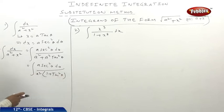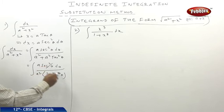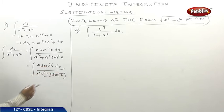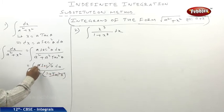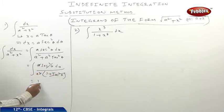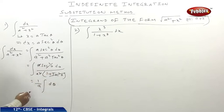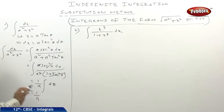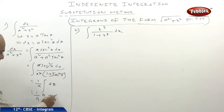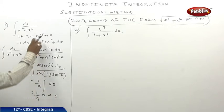We know that sec²θ minus tan²θ equals 1, so 1 plus tan²θ equals sec²θ. The sec²θ terms cancel, and the a's cancel, leaving (1/a) integral of dθ, which equals (1/a)θ plus c.